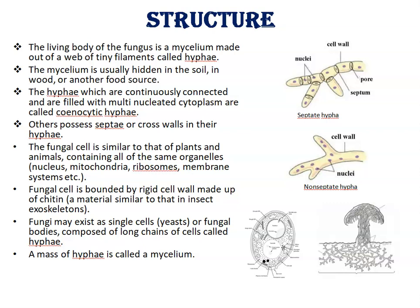This chitin material is similar to that found in the insect exoskeleton. Fungi may exist as single cells — for example, yeast — or the fungal body may be composed of long chains of cells called hyphae. The mass of hyphae is called mycelium.